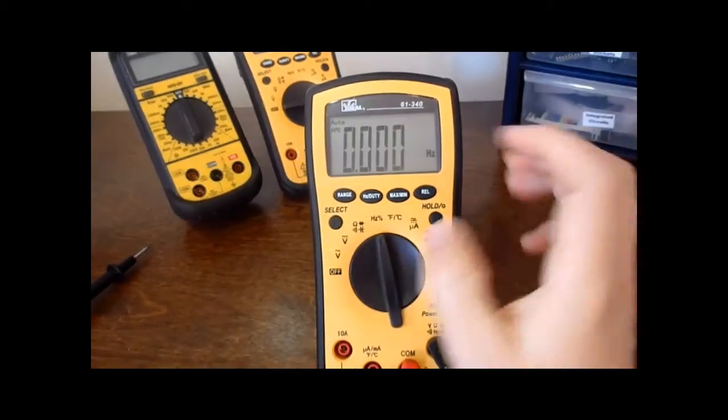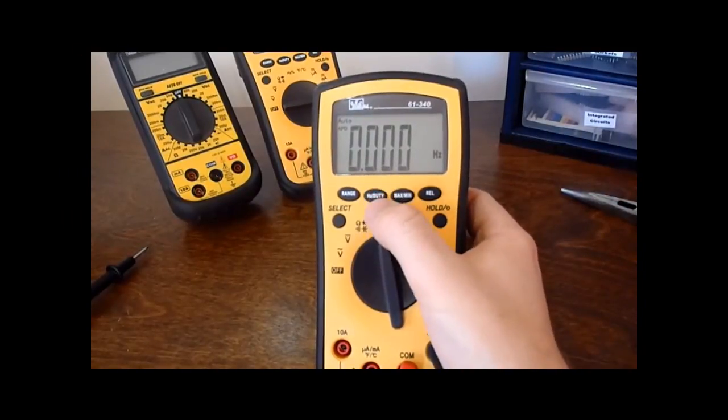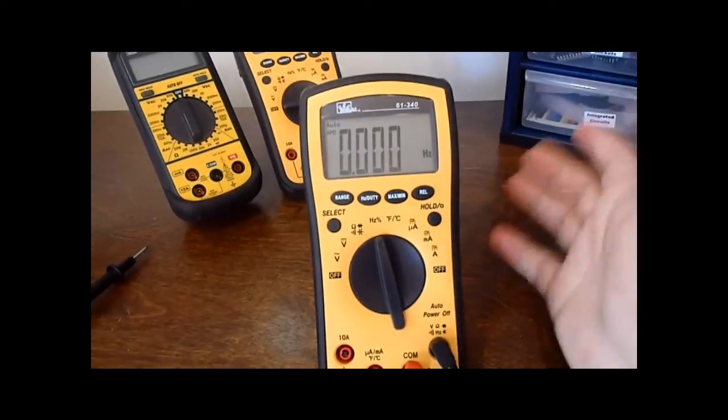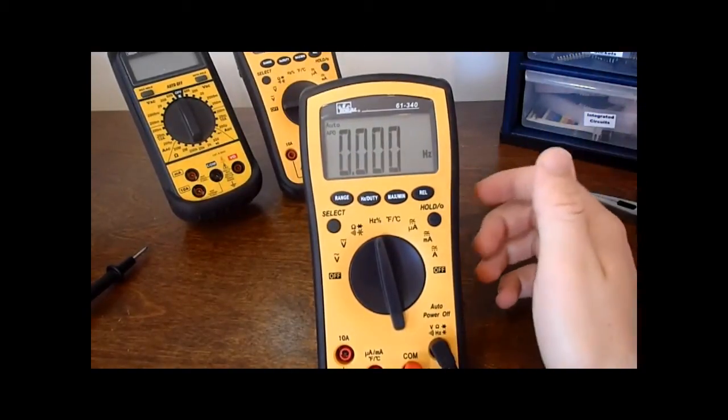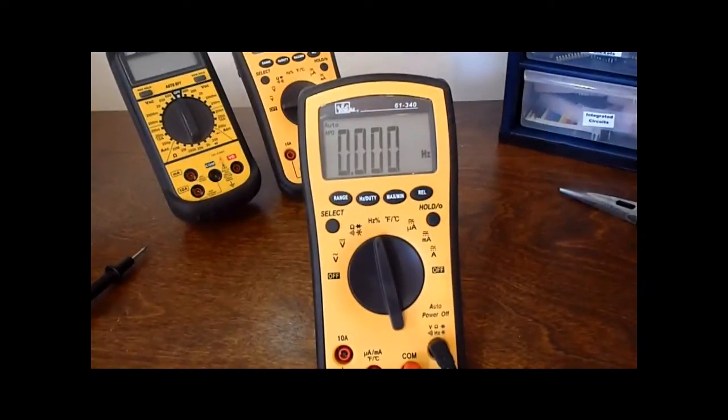On the next one we have hertz or duty cycle, and you can toggle using this button. This is actually pretty amazing because it can measure up to 10 megahertz, which I thought was pretty quick for this little unit. Its quoted accuracy is 0.1%, so it's a very nice detail.